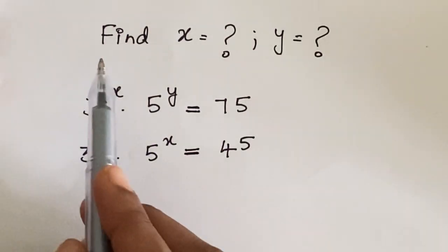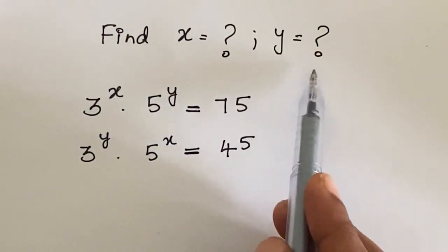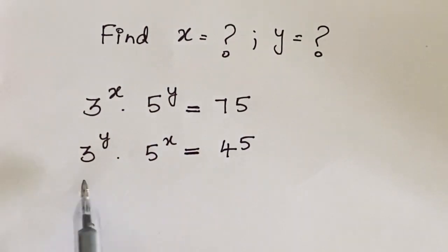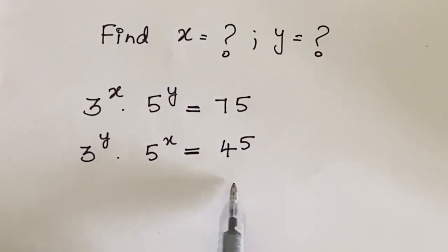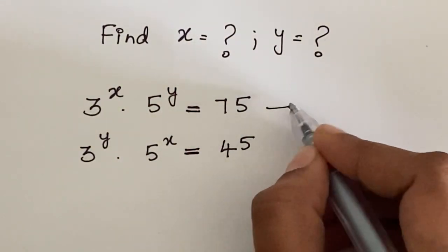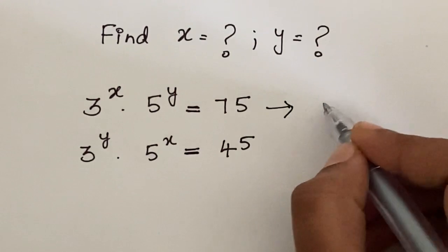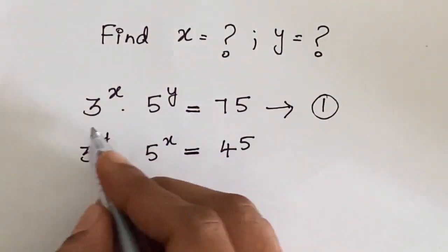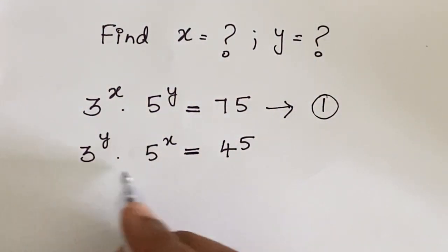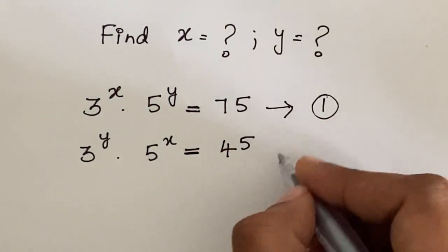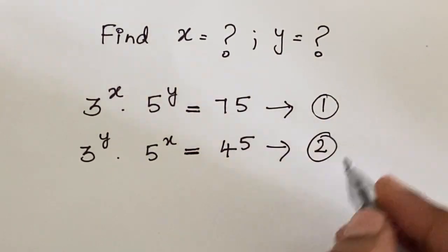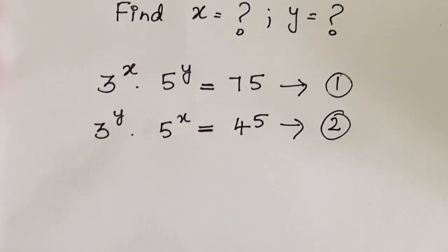Hi friends, let's see how to simplify this nice math problem. Find the value of x and y. Given 3 to the power x times 5 to the power y equals 75 — let this be equation number 1 — and 3 to the power y times 5 to the power x equals 45 — let this be equation number 2.